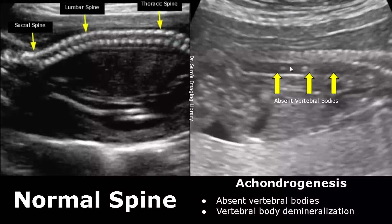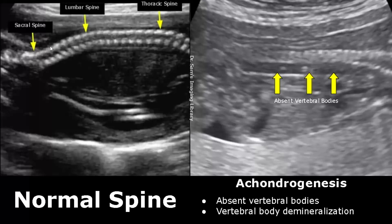Achondrogenesis is a rare skeletal dysplasia with a variety of features. The most common one is absent spine. This is a normal image of the fetal spine in sagittal view — we can see a well-developed hyperechoic spine. But in the abnormal image, we do not see any hyperechoic spine, as the vertebral bodies are absent due to vertebral body demineralization.